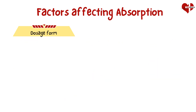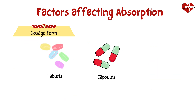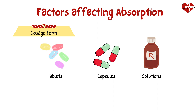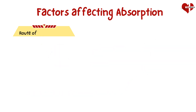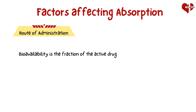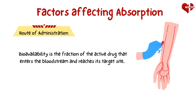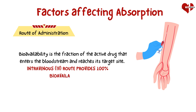The dosage form of a drug, such as tablets, capsules, or solutions, can influence absorption rates. For example, solutions generally have a higher absorption rate compared to solid forms like tablets. Different routes of drug administration affect bioavailability, which is the fraction of the active drug that enters the bloodstream and reaches its target site. Intravenous administration provides 100% bioavailability, as the drug is directly delivered to the systemic circulation.